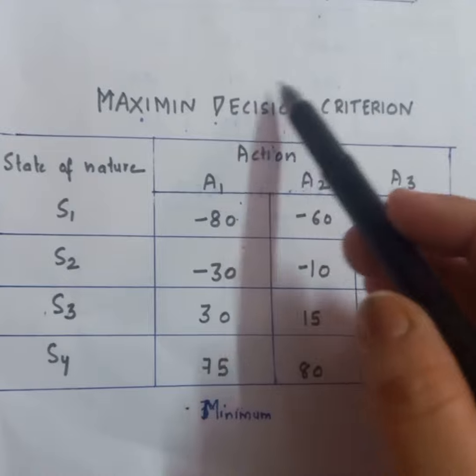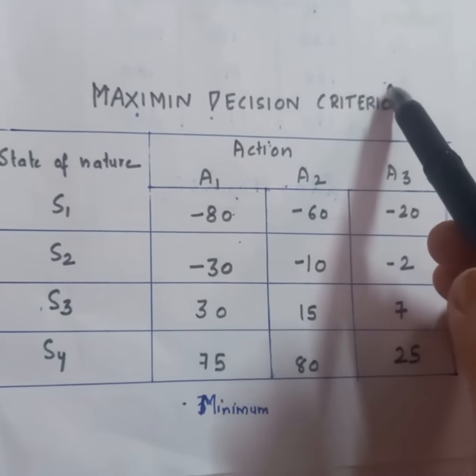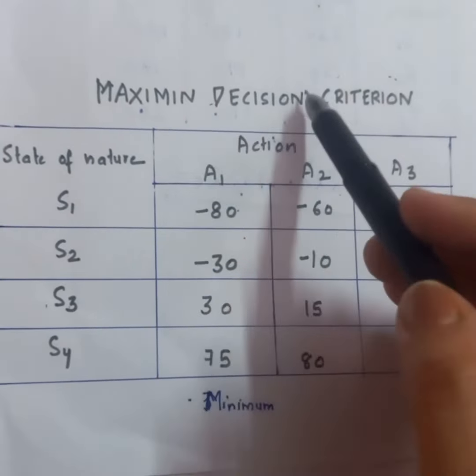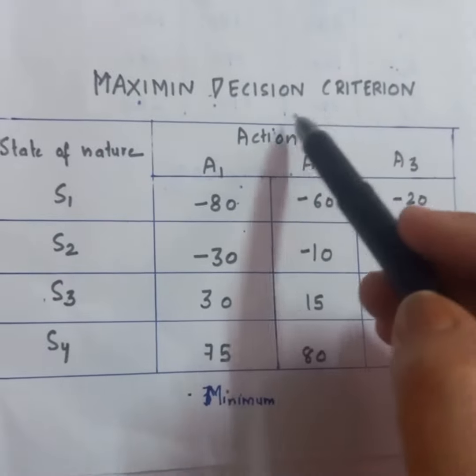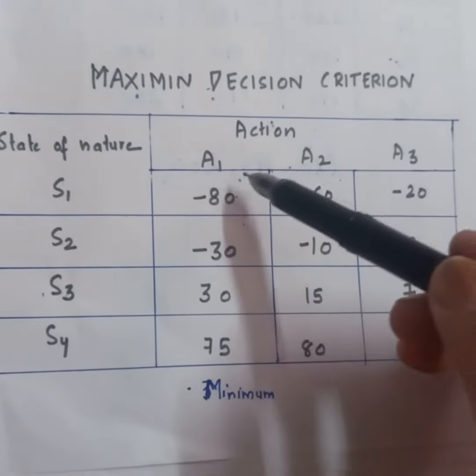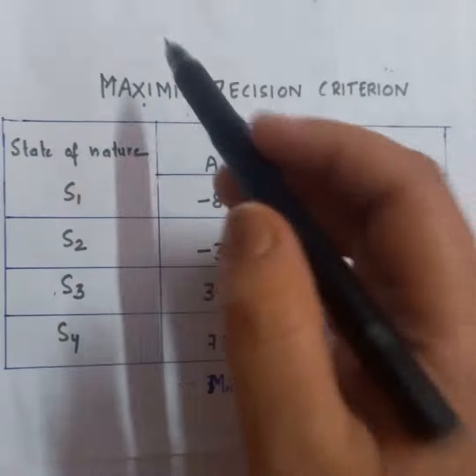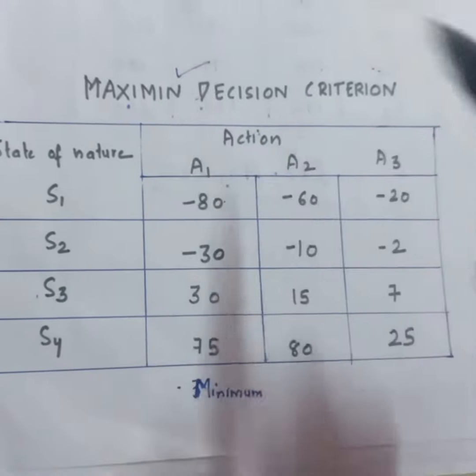Now, let's talk about Maximin decision criteria. Now, as the name suggests, in this we have to choose the maximum among the minimums. So, with alternative courses of action A1, A2, A3, we will see what our minimum values are.